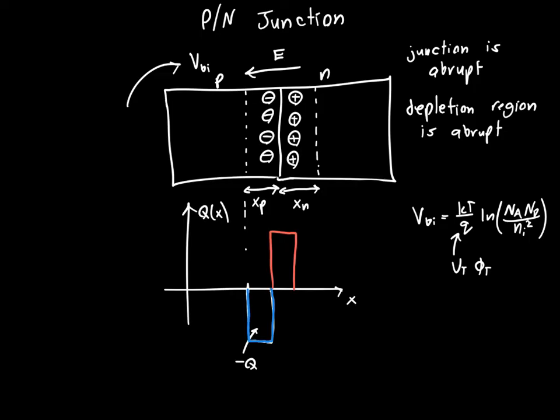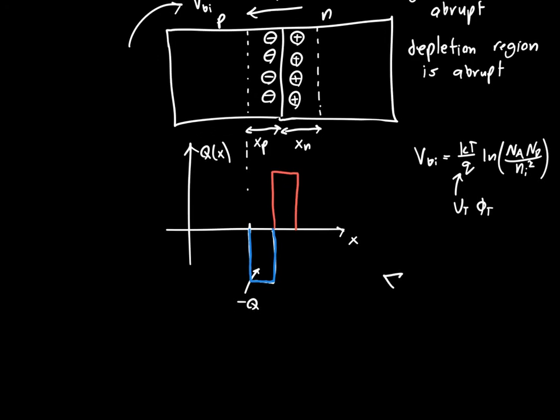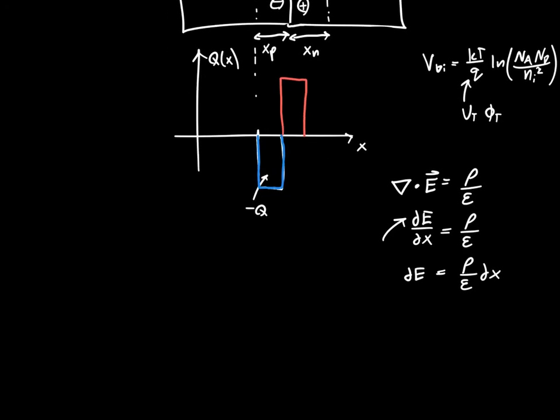Well, we know from Gauss's law that the divergence of the electric field is just equal to rho over epsilon. And if you haven't memorized this by now, you should get it tattooed on your arm. In one dimension, that just looks like dE/dx is equal to rho over epsilon. And so if we're interested in the electric field, we can say dE is just rho over epsilon dx. And I apologize to any of the mathematicians watching this video.